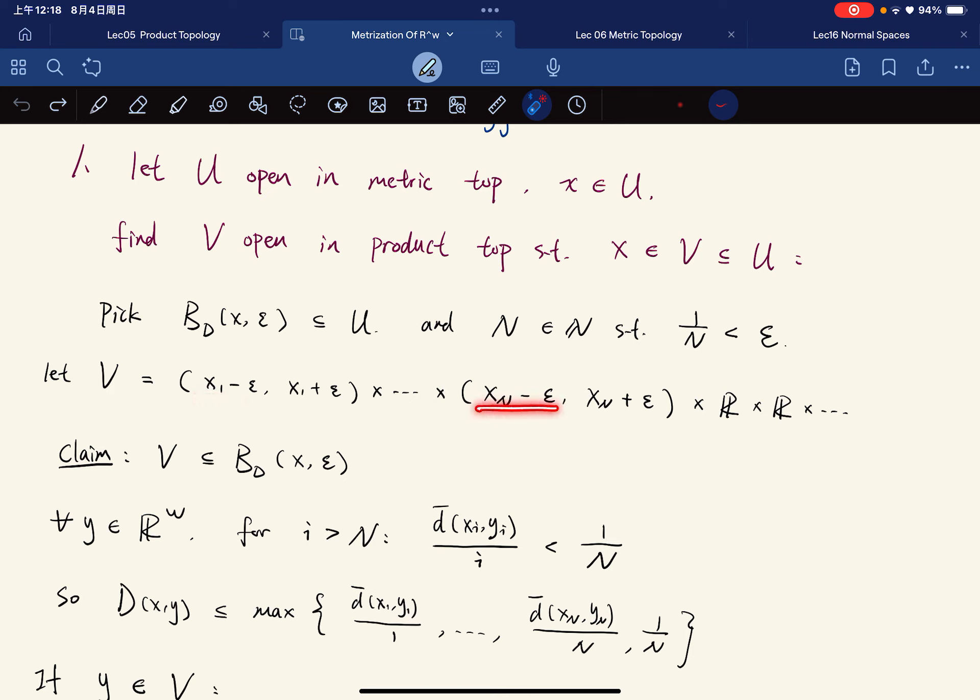until (xₙ - ε, xₙ + ε), and the rest is the product of reals. So this is a basis element in R^ω, and we claim that this V is contained in this.